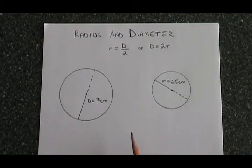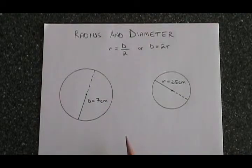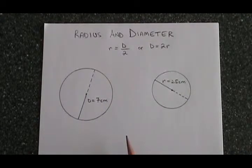Sometimes we're not given the radius, we're given the diameter instead. So we have to know the difference between the two and how to calculate one from the other.